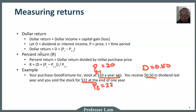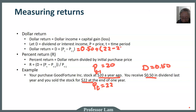First, let's compute the dollar return. You have an income return of fifty cents. Your dollar return equals fifty cents in dividends plus the capital gain. The capital gain is the selling price of twenty-two dollars minus the purchase price of twenty dollars, which equals two dollars. So total dollar return is fifty cents plus two dollars, giving us two dollars and fifty cents.